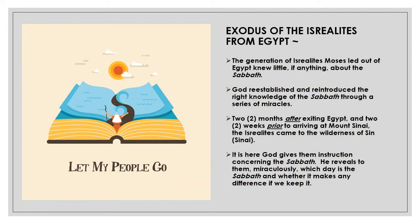God executed his plan to let his people go, and the Exodus of the Israelites from Egypt took place. The generation of Israelites that Moses led out of Egypt knew little, if anything, about the Sabbath. God reestablished and reintroduced the right knowledge of the Sabbath through a series of miracles. Two months after exiting Egypt, and two weeks prior to arriving at Mount Sinai, the Israelites came to the Wilderness of Sin, or Sinai. It is here that God gives them instruction concerning the Sabbath — revealing to them, miraculously, which day is the Sabbath.